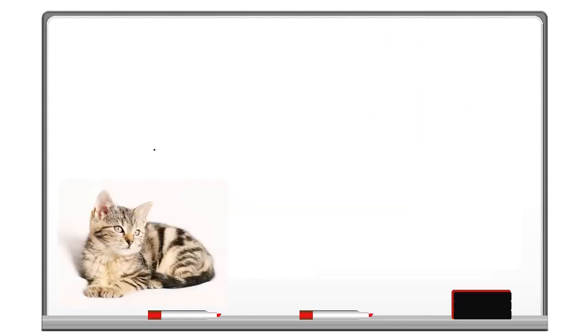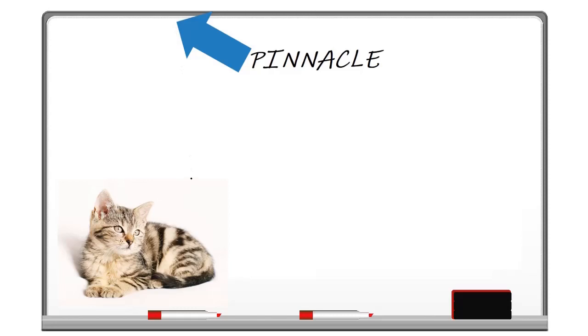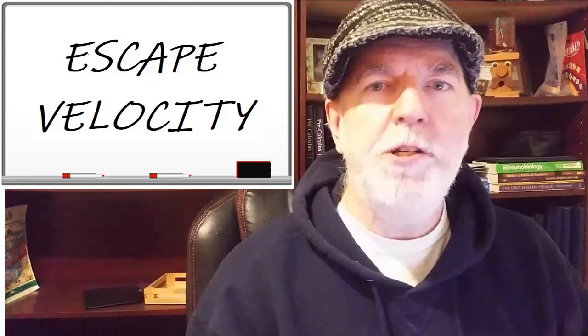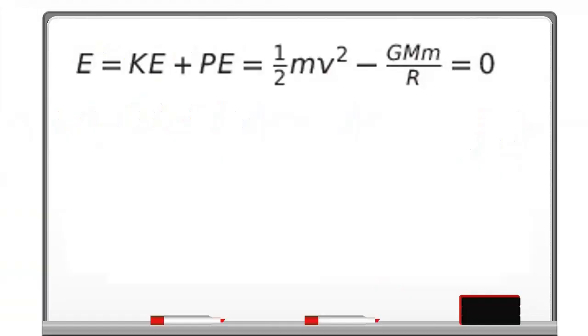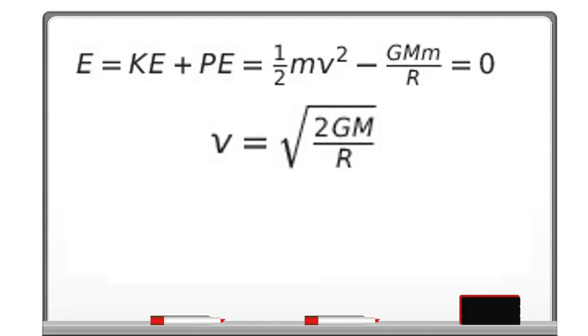The flea leaps, reaching some pinnacle of height, and then is drawn back toward the cat. If it leaps hard enough, it never reaches that pinnacle. The required initial speed for such a leap is what we call the escape velocity. Because the total energy at infinity is 0 and energy is conserved, the total energy will always be 0. We can manipulate this equation to give us an expression for velocity. That velocity is our escape velocity.